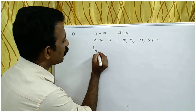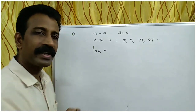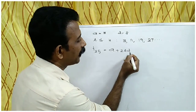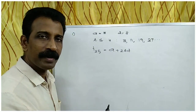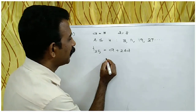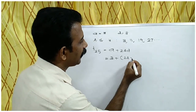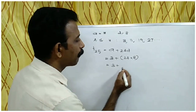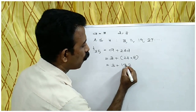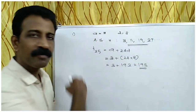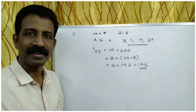So the 25th term, T25: 24D is equal to 24D, which equals 192. These are the answers for the first question.